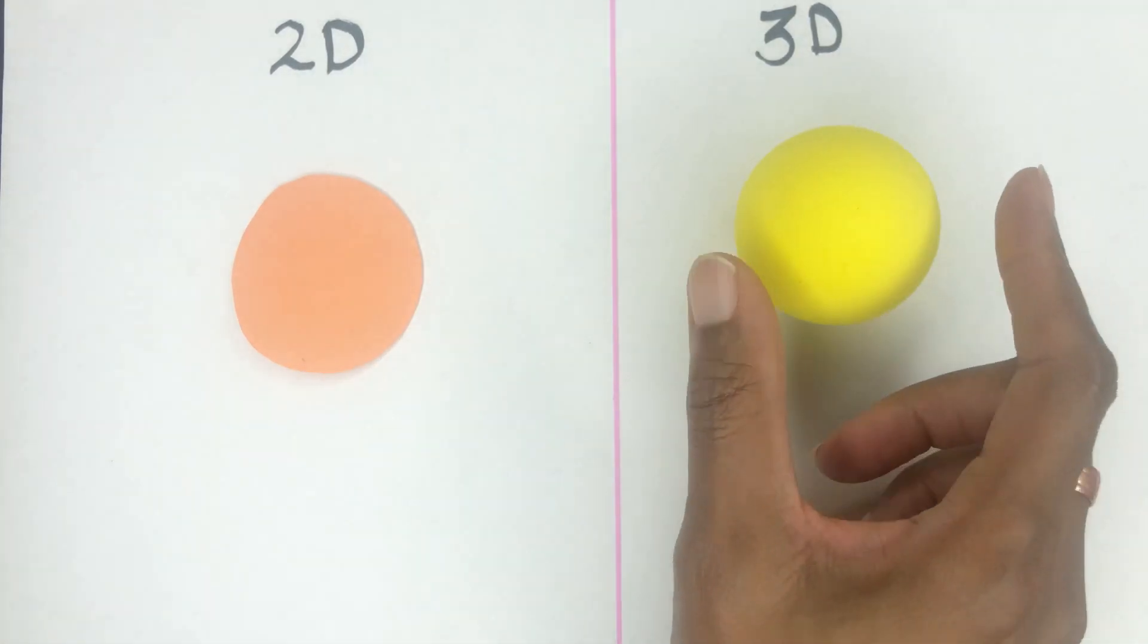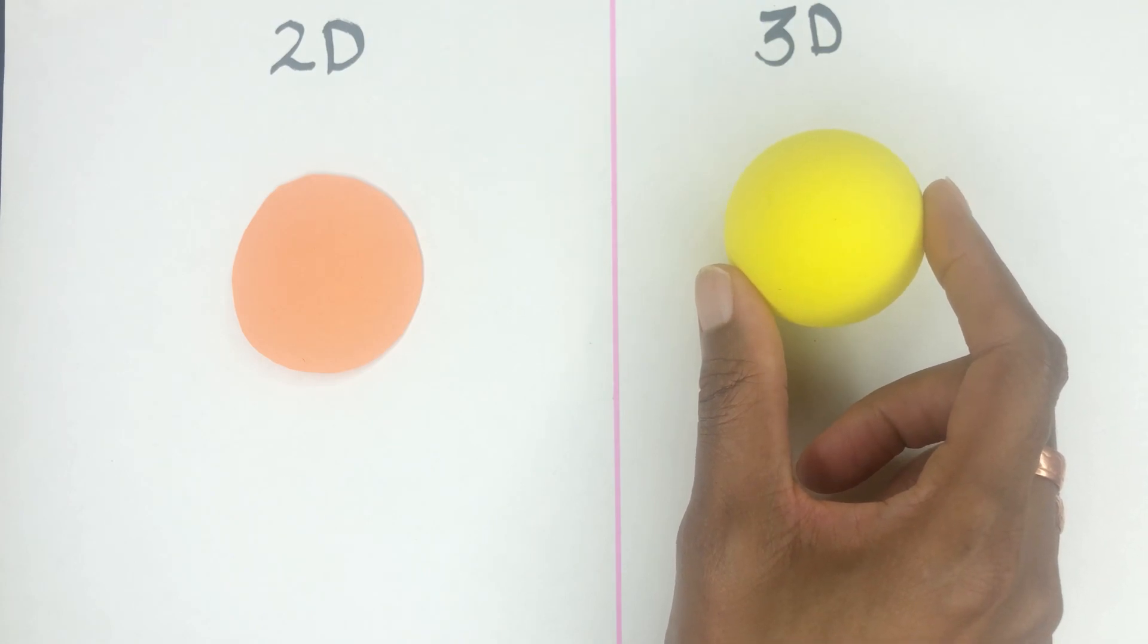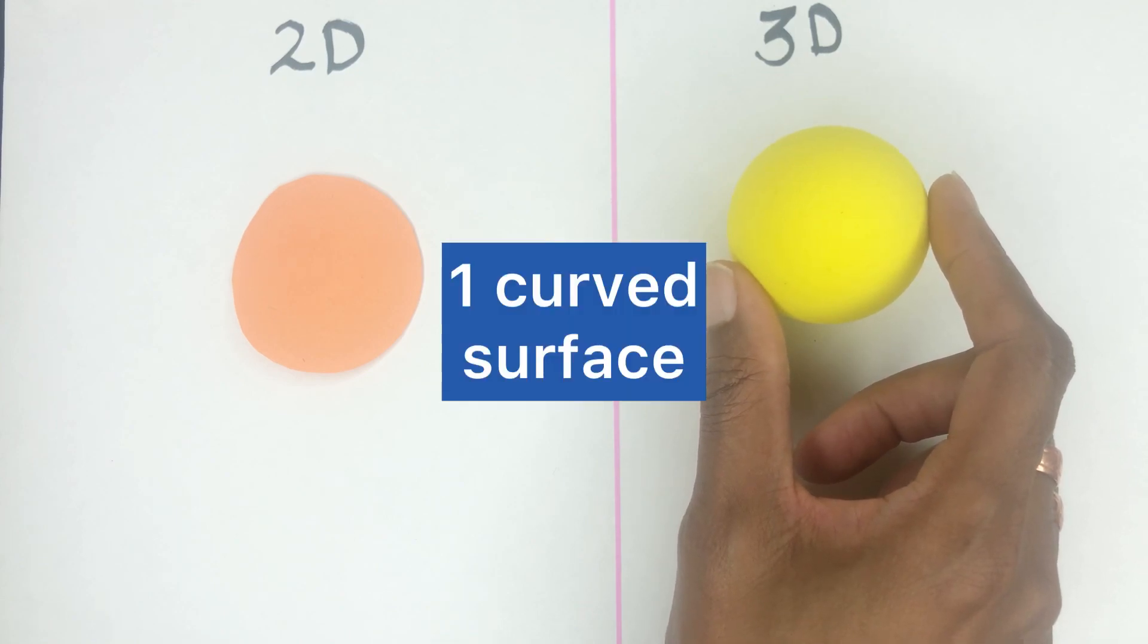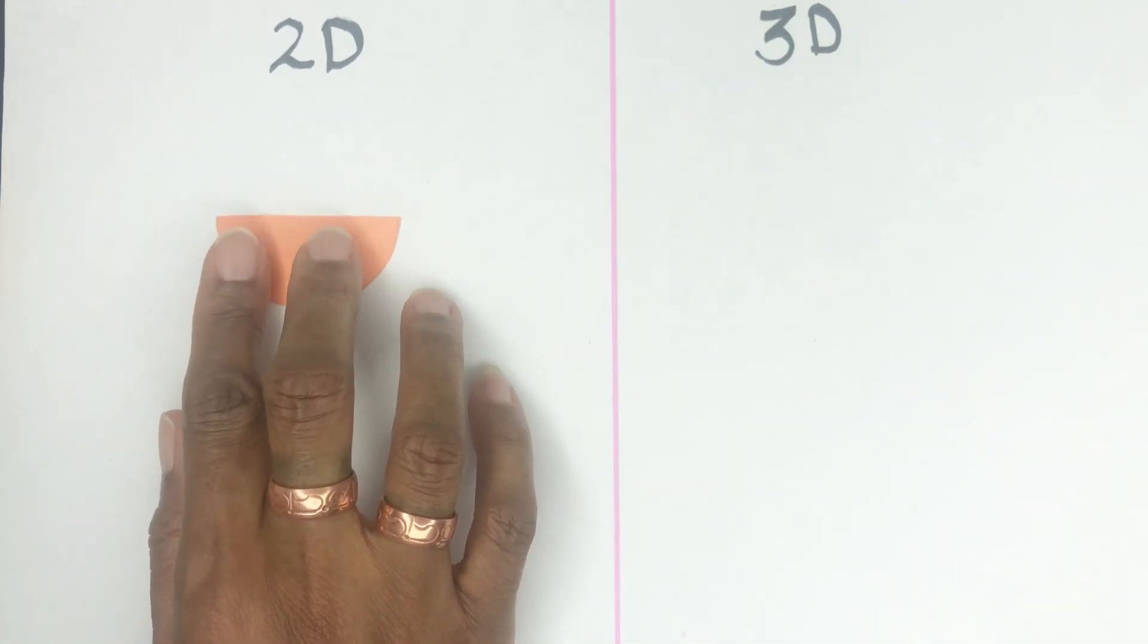The 2D circle, once it's three-dimensional, is called a sphere. The geometry or properties of the sphere means that it has one curved surface, no edges, and no vertices. This is a semicircle.